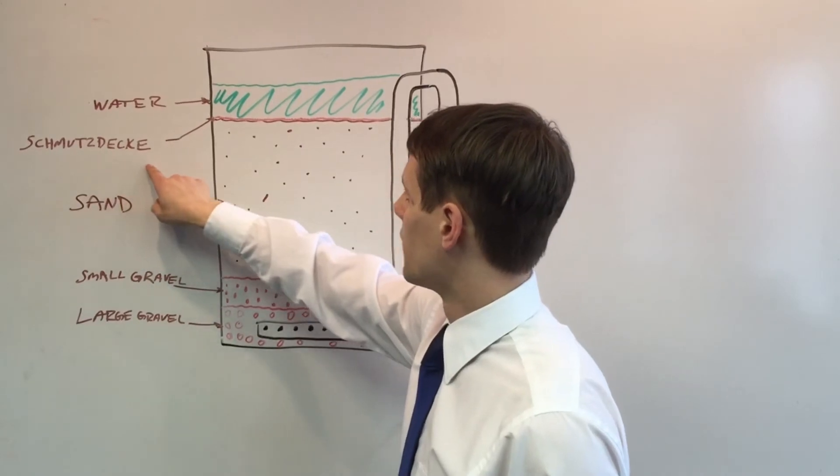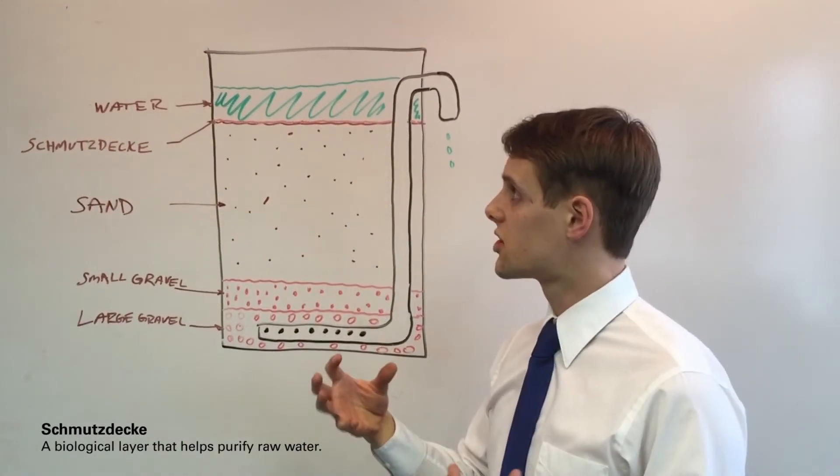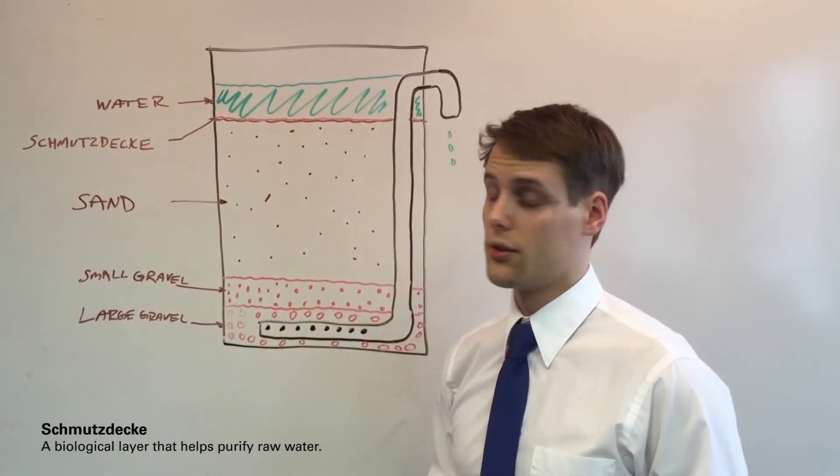And then you have a layer called schmutzdecke, which is a biological layer that eats the biological mass in the water that causes waterborne illnesses.